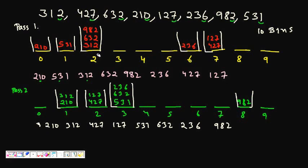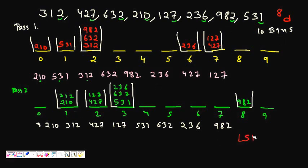To understand this, let's look at an example. We have a list of numbers — they are all three-digit numbers and there are eight of them. We have to sort eight numbers each of three digits. We start sorting: if there are d digits in the numbers then we will have d passes, and in each pass we sort based on a particular digit. We start from the LSB and move up to the MSB.